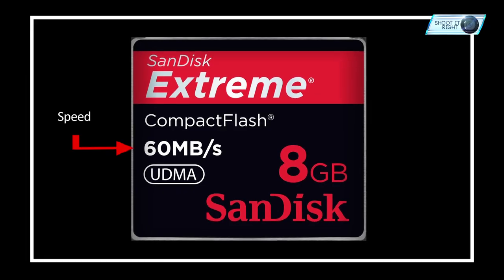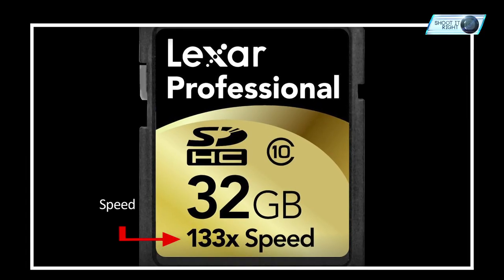Apart from the physical difference, the most confusing aspect of different memory cards are their speeds. Some cards score speed in megabytes per second while others just use an x suffix, as in 133x on this card. To add to the confusion, some only list a class of card. So how can they be compared? Let me decode it for you. 1x is equivalent to 150 Kbps, while 10x is equivalent to 1.5 Mbps and 100x is equivalent to 15 Mbps.